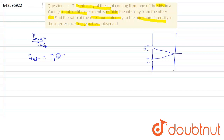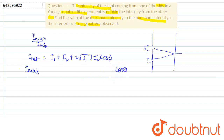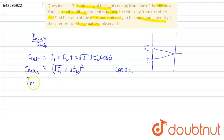First, we should know the basic formula for intensity: I = I1 + I2 + 2√(I1·I2)·cos φ. For I_max, the value of cos φ equals 1, so I_max = (√I1 + √I2)², which expands to I1 + I2 + 2√(I1·I2), equivalent to (A1 + A2)².